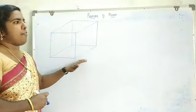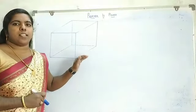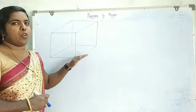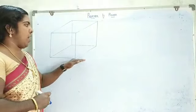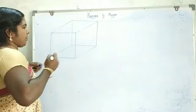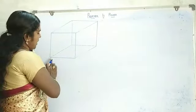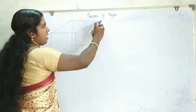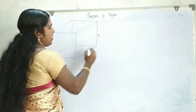Each face of your cube is a square. This is the length of your side. The length of your side is denoted as 'a'.